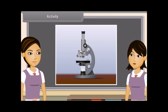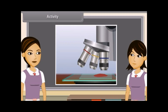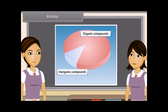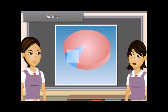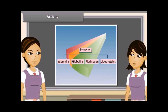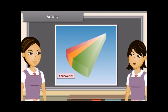Let us do an activity to find out the different types of blood cells. Taking a drop of blood on a slide and observing it under a microscope, we can see red blood corpuscles or erythrocytes, white blood cells or leukocytes, and platelets. Plasma forms 55% of the total volume of blood. Plasma is a complex fluid containing inorganic salts and organic compounds like albumins, globulins, and fibrinogens, glucose, amino acids, lipids.